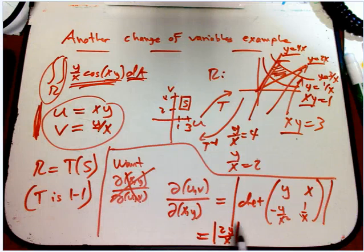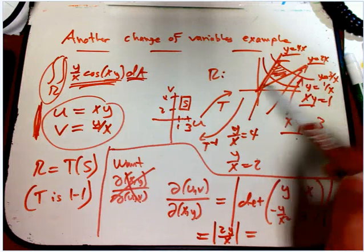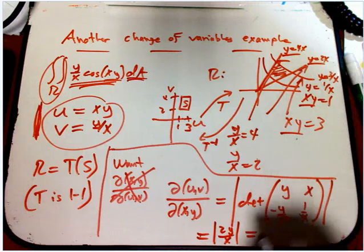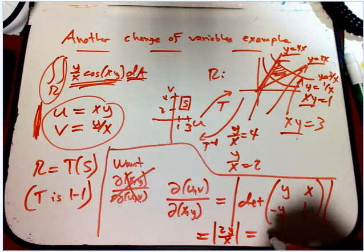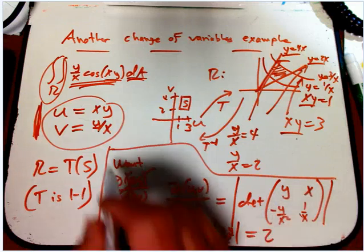Now there's a couple things that are a really big break. Well, there's a small break, which is the absolute value can go away because all of the x's and y's here are positive. So that goes away. And then the really big break is that, hey, look, that's v.